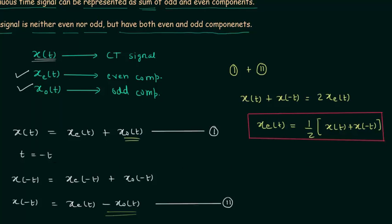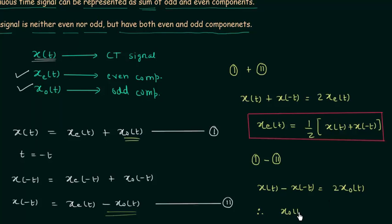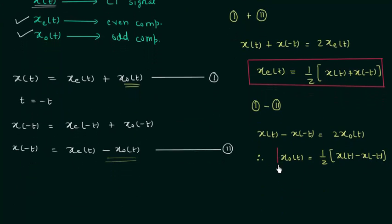Now we will find the odd component by subtracting equation number 2 from equation number 1. This gives x(t) minus x(-t) on the left hand side, and twice x_o(t) on the right hand side. Therefore the odd component x_o(t) is equal to one half times the quantity x(t) minus x(-t). These two expressions for the even and odd components are very important and will be used to solve various problems in the coming presentations.